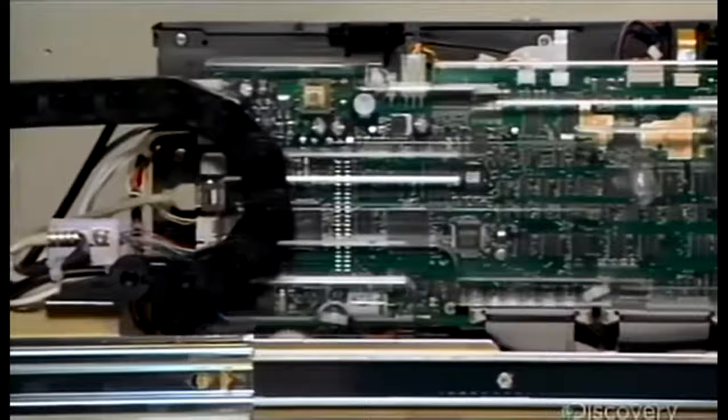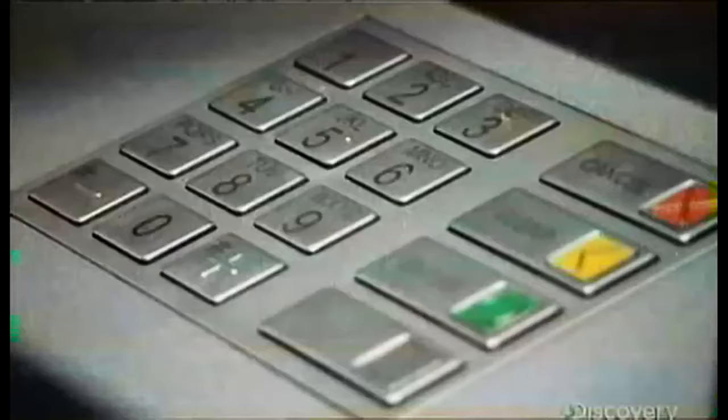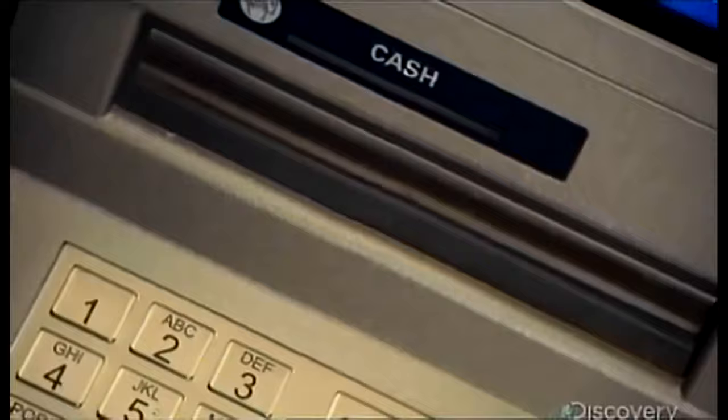The first reader looks for a special code that confirms the card is real. The second reader grabs your account number and password to check against what you've just keyed in. Once your password is confirmed, the ATM connects to your bank's network.